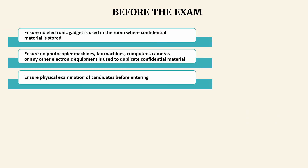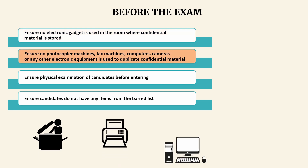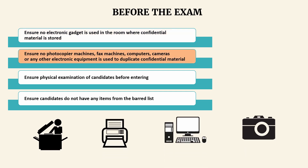They must ensure that no electronic gadgets are used by any personnel in the room where confidential material is stored. They should also ensure that no photocopy machines, fax machines, computers, cameras or any other electronic equipment are used to duplicate copies of confidential material.